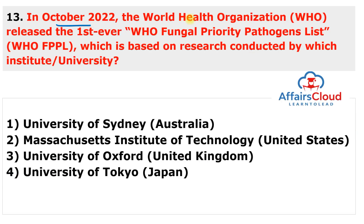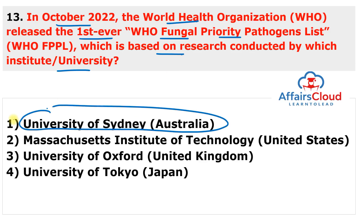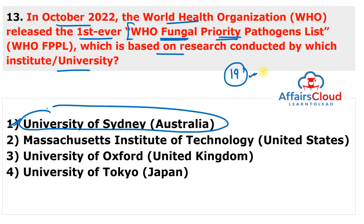Next question: WHO released the first-ever WHO Fungal Priority Pathogens List based on research conducted by which institution? The research was conducted by the University of Sydney in Australia. The WHO Fungal Priority Pathogens List (WHO FPPL) highlights a catalog of 19 fungi that pose the greatest harm to public health. The WHO FPPL is divided into three categories: critical, high, and medium priority.